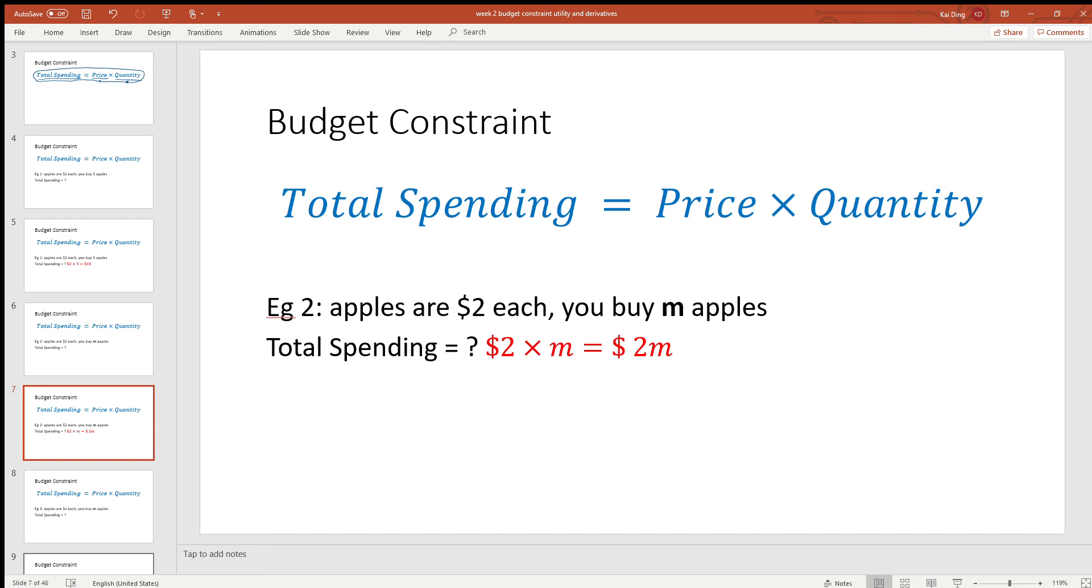In economic models, we often need to deal with symbols or letters instead of quantities like 2 and 5. We need to deal with both quantities, numbers, and symbols like m.